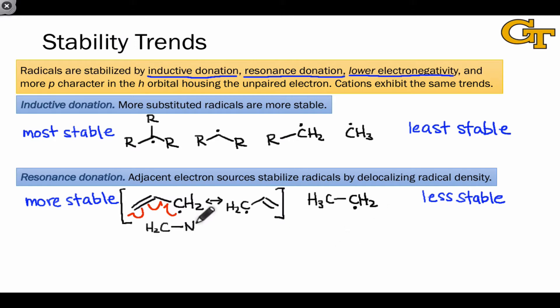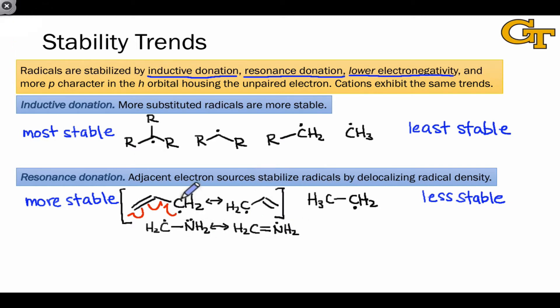We see the same idea in action in radicals adjacent to oxygen or nitrogen. In this case, the lone pair can get involved in resonance, showing that the radical character is delocalized over carbon and the heteroatom. It's the sharing of the radical character on multiple atoms that stabilizes resonance-active radicals — this is just another application of the electron delocalization idea that we've seen in a resonance context previously.